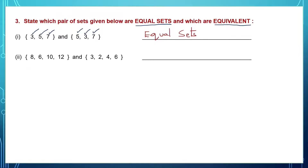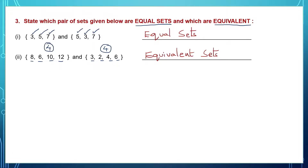Second one: let's see if the elements are the same. I have 8 in the first set — I don't have 8 in the other. The elements differ. But let's count the number of elements: 1, 2, 3, 4 — there are 4 elements here. Counting the second set: 1, 2, 3, 4 — I have 4 elements here too. Since the number of elements is the same, these two sets are called equivalent sets, because there are 4 elements in each.